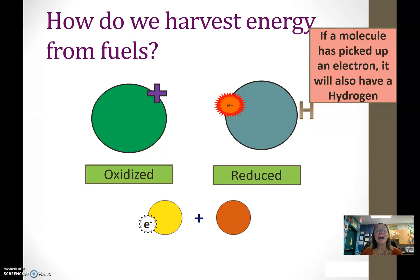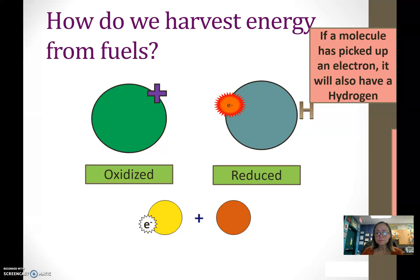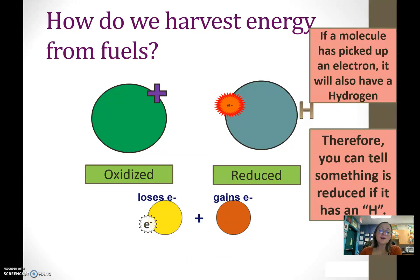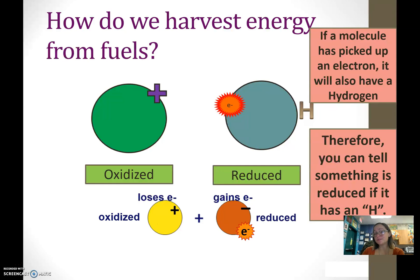So if something loses or donates an electron, we call it oxidized. If something gains an electron, it is reduced. Any time we go through these steps, if anything is oxidized, something has to be reduced. Or if a molecule is reduced, the electrons had to come from somewhere — that means something else was oxidized.